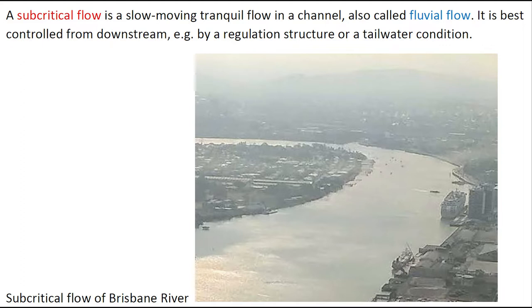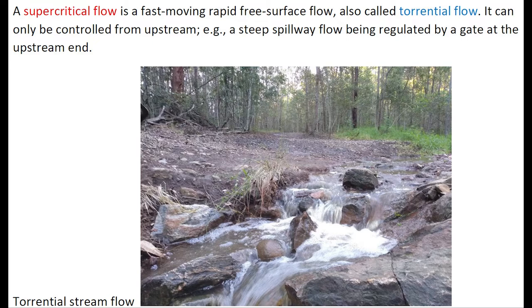A subcritical flow is a slow-moving, tranquil flow in a channel, also called fluvial flow. It is best controlled from downstream, for example, by a regulation structure or by some tailwater conditions. In this photograph, the Brisbane River is controlled by the tidal conditions in Moreton Bay.